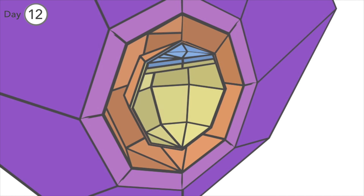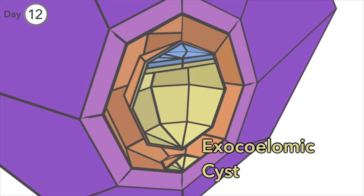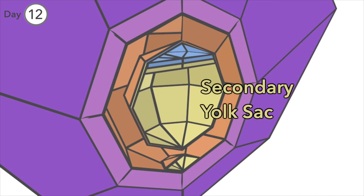Day 12. The yolk sac pinches off part of itself, leaving us with a remnant of the primitive yolk sac, the exocelomic cyst, and the secondary yolk sac, which we'll from now on just call the yolk sac.